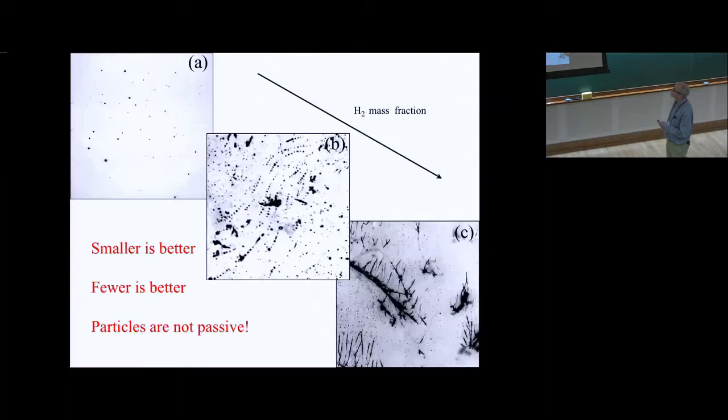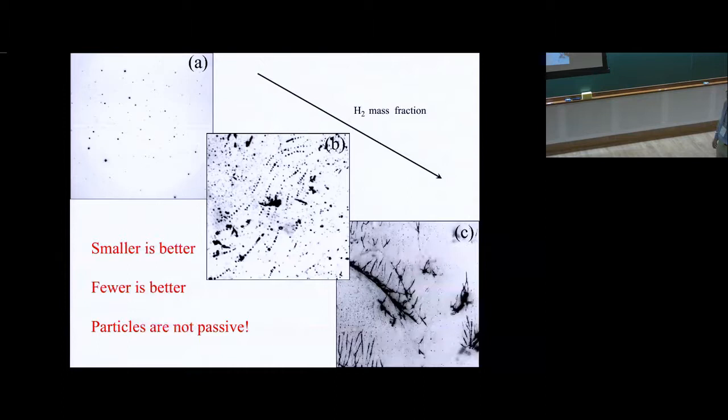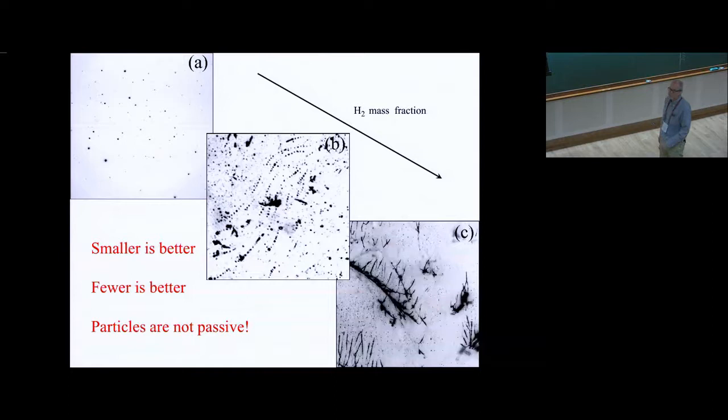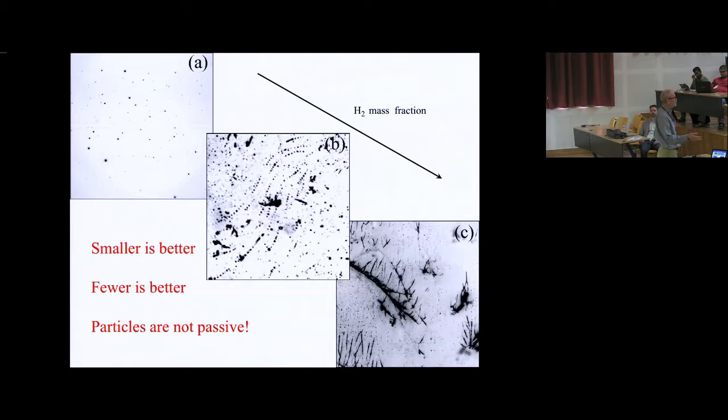In seeing recent talks on shear flow transition by Dwight Barkley, he gets states in plane Poiseuille flow that propagate orthogonally, but they have mirror states that propagate in the opposite direction. I'm almost 100% sure those states have a net helicity and they have an oppositely signed net helicity. I think there are helicity considerations that have yet to be discovered in shear flows.